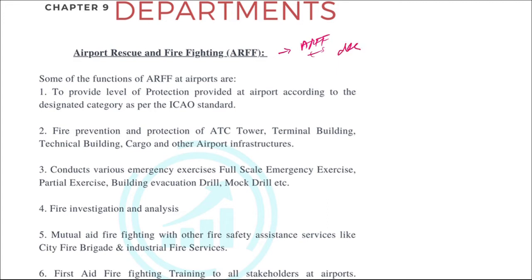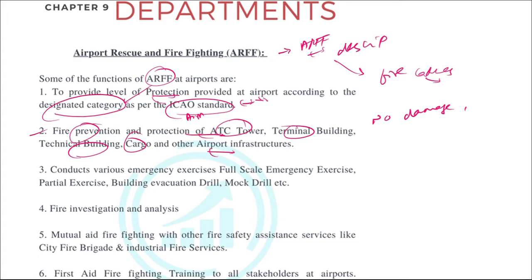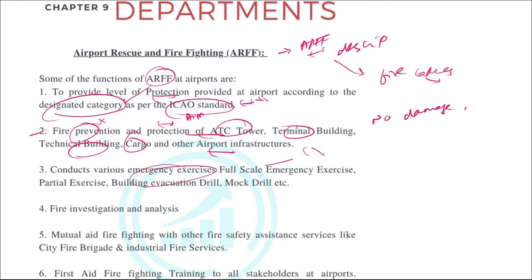Next is airport rescue and firefighting, ARFF. In general, they have to ensure no fire catches in the airport, take all safety precautions, and if an accident happens, ensure no damage is caused to airport infrastructure or personnel. They have to provide the level of protection at the airport according to the designated category. Every airport has a category designated by ICAO, and they must conduct emergency exercises like full-scale emergency exercises, partial exercises, building evacuations, and drills.